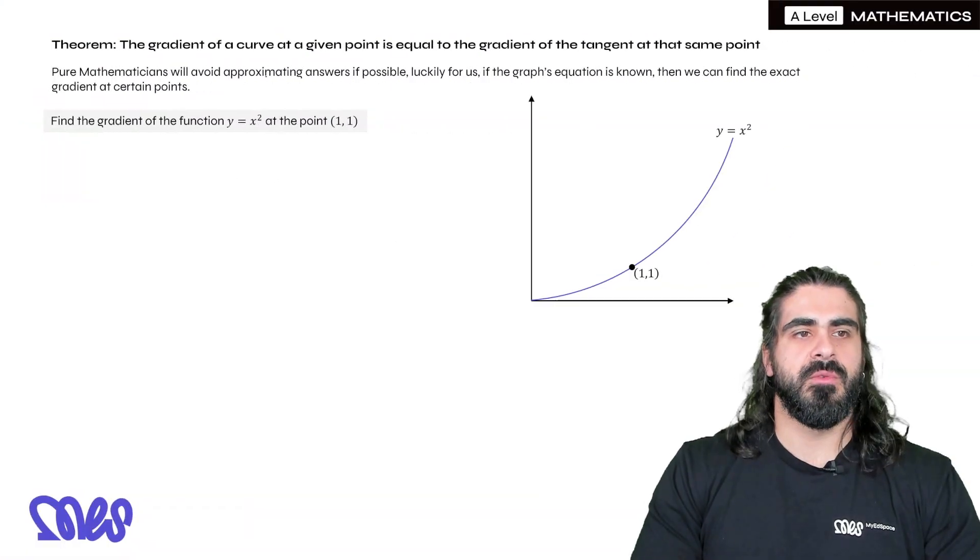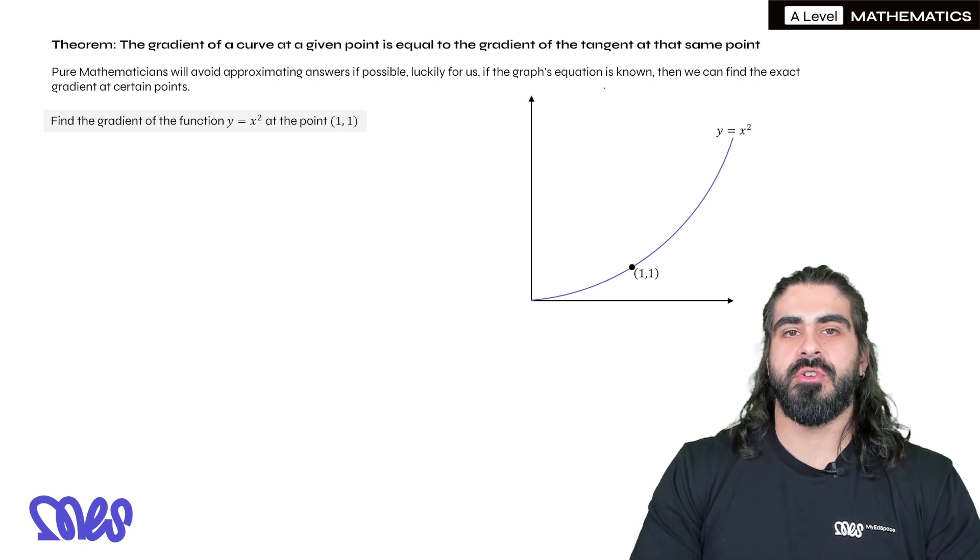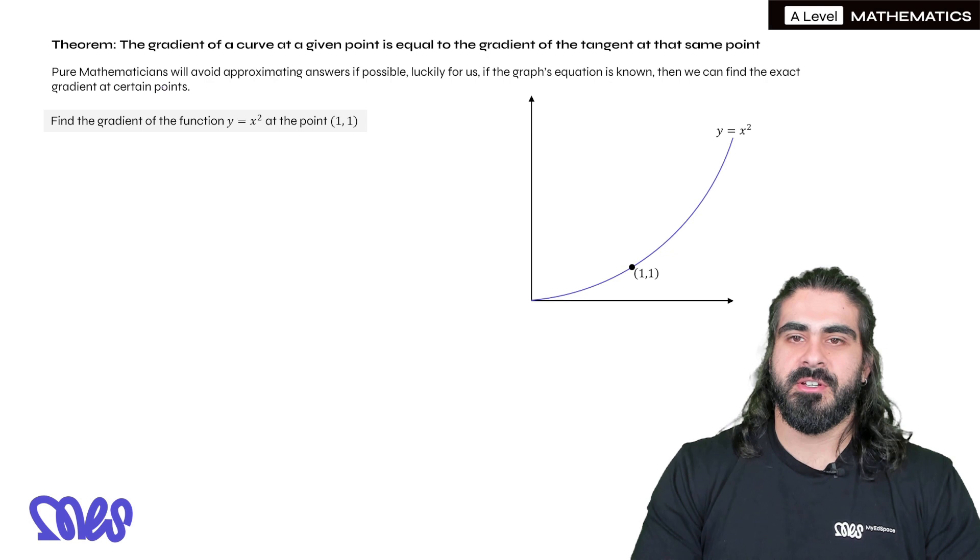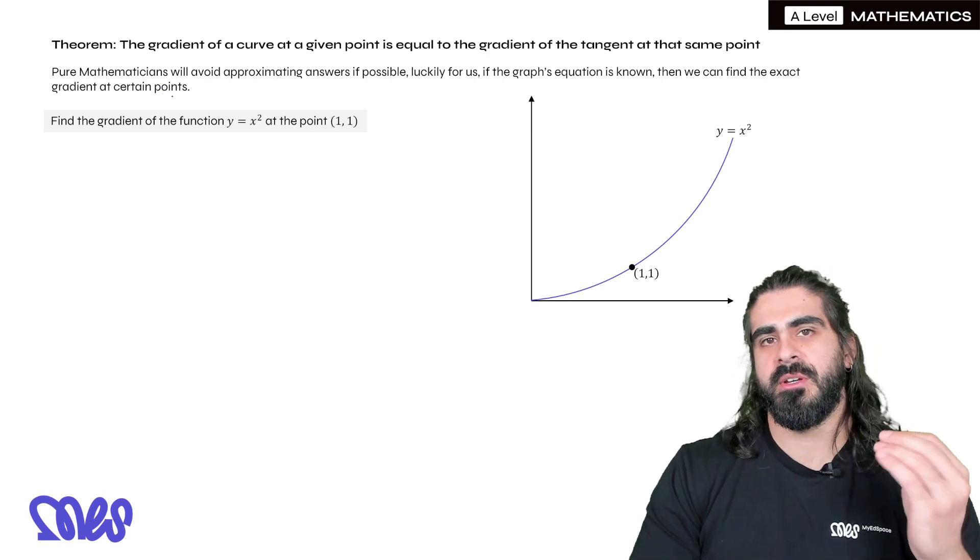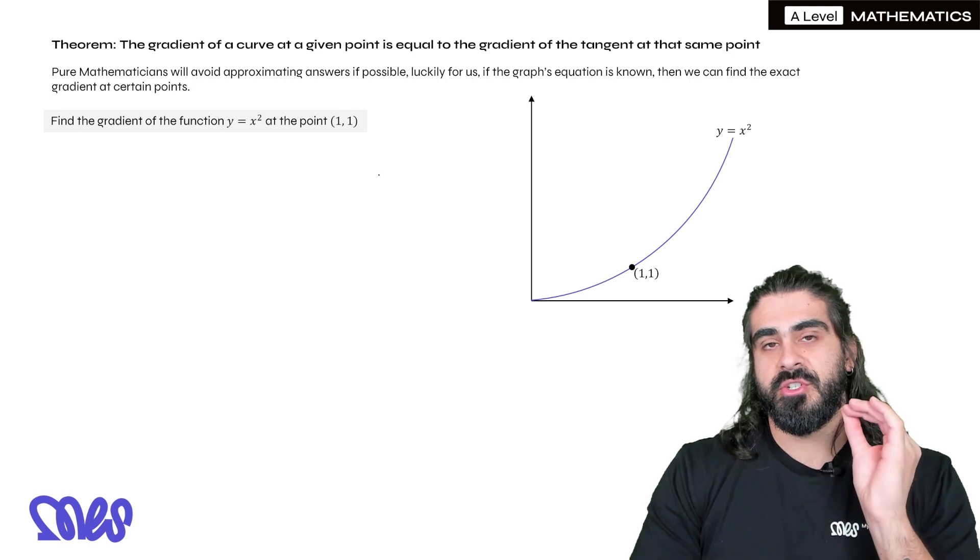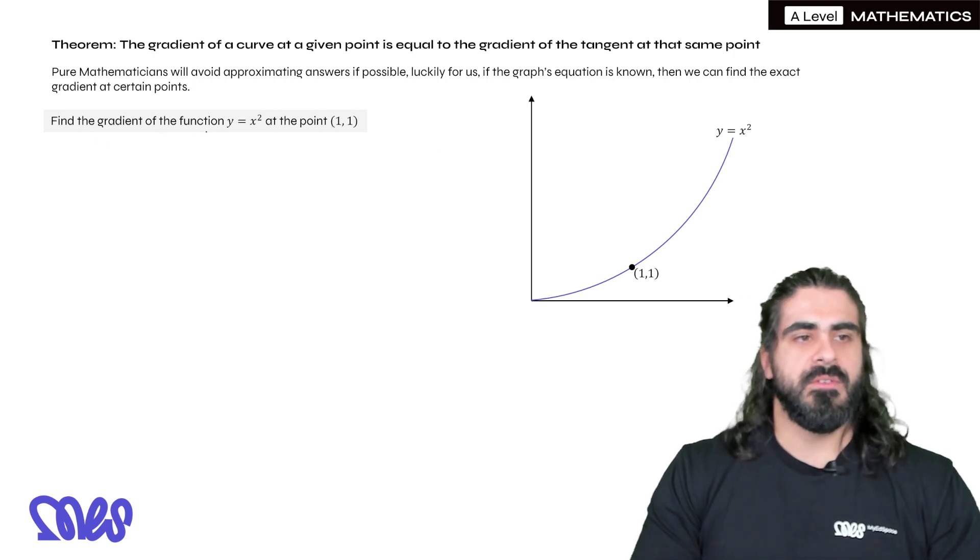So pure mathematicians will avoid approximating answers if possible. Luckily for us, if we know the graph's equation, then we can find the exact gradient at certain points. I'm going to show you how we can do it when we know the point we want, and then in the next episode, we're going to do the general gradient function.